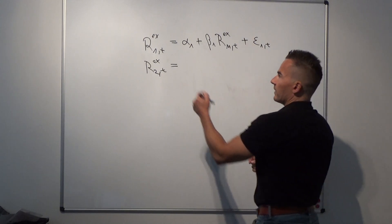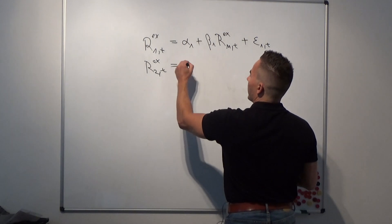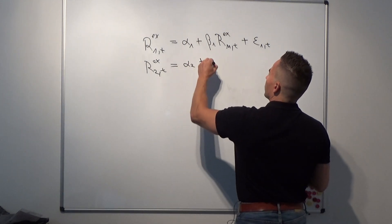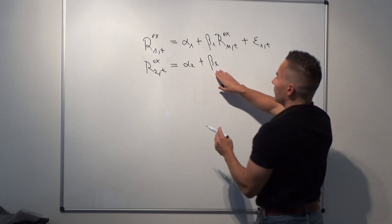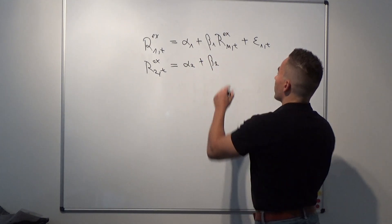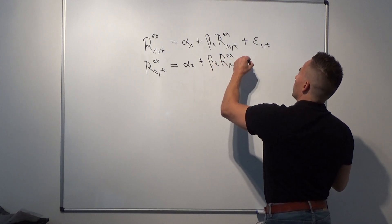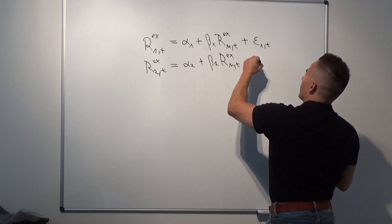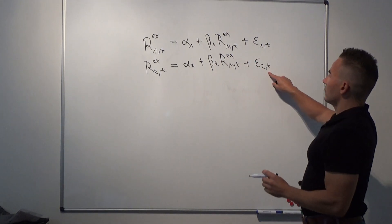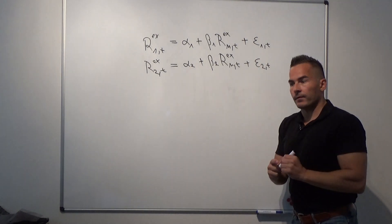For the second test asset we run the same equation: an intercept term alpha 2, plus beta 2 — the exposure of test asset 2 against the market factor — times Rxmt, plus epsilon 2t, which is the regression residual from this second equation.